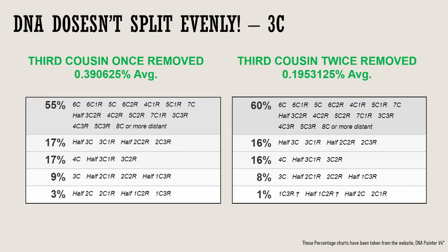DNA evidently doesn't split evenly, which is why these figures are averages — statistical averages when you split things by two, by two, by two. In reality you can share a lot more or a lot less DNA with these cousins. In fact, you don't match on average 10% of your third cousins on DNA tests.